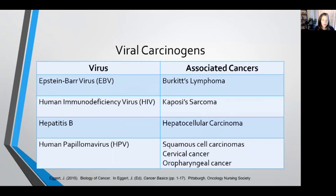Certain viruses have also been associated with certain types of cancer. The Epstein-Barr virus, which is the virus responsible for causing mono, has been associated with a type of lymphoma called Burkitt's lymphoma. The human immunodeficiency virus, or HIV, can cause Kaposi's sarcoma. Hepatitis B has been linked to hepatocellular carcinoma, or liver cancer. And the human papillomavirus, or HPV, has been linked to several types of cancers, most notably cervical cancer.